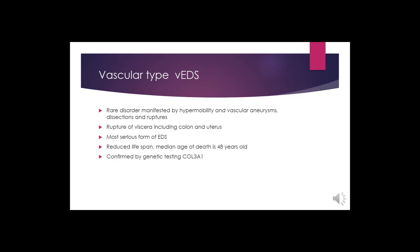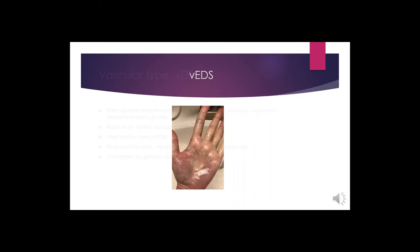Vascular EDS is a rare disorder also manifested by hypermobility, but in this type the vascular system is affected — with aneurysms, dissections, and ruptures. There can also be rupture of viscera including the colon and uterus. This is the most serious form of EDS, with significant complications and a median age of death of 48 years. It can be confirmed by genetic testing of COL3A1. The very paper-thin skin and prominent blood vessels are characteristic of this type.